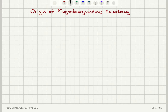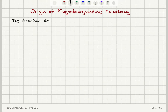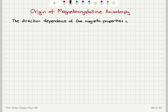Now we will talk about the origin of magnetocrystalline anisotropy. The source of anisotropy can be intrinsic or extrinsic — it can be induced by some external mechanism, or it can be due to the structure of the material, just like magnetocrystalline anisotropy. Anisotropy is basically the direction dependence of magnetic properties, which can be intrinsic as in magnetocrystalline anisotropy, or induced by some external mechanism.